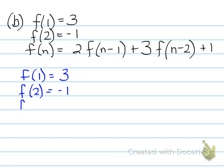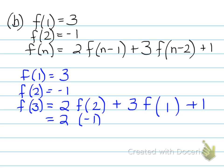You're asked to find F(3). Well, F(3) is equal to 2 times F(2) plus 3 times F(1) plus 1. So the value of F at 3 is 2 times negative 1 plus 3 times 3 plus 1. Turns out that the value here is 8.